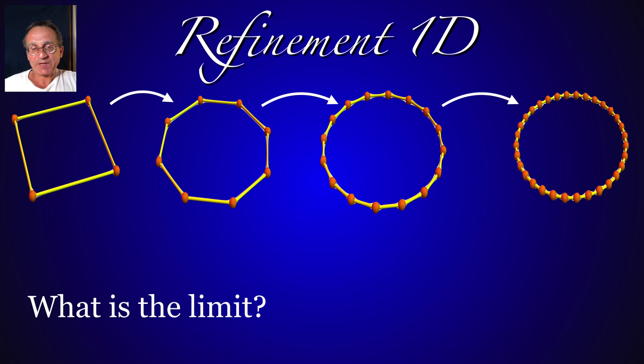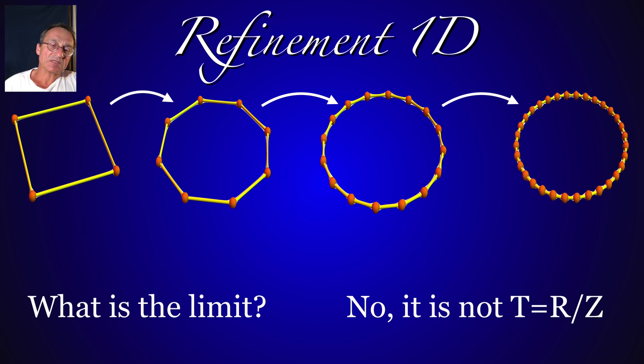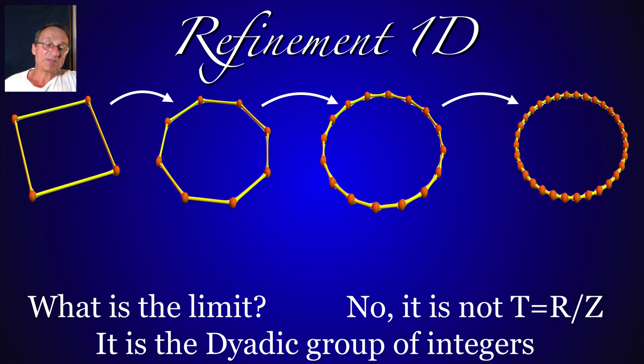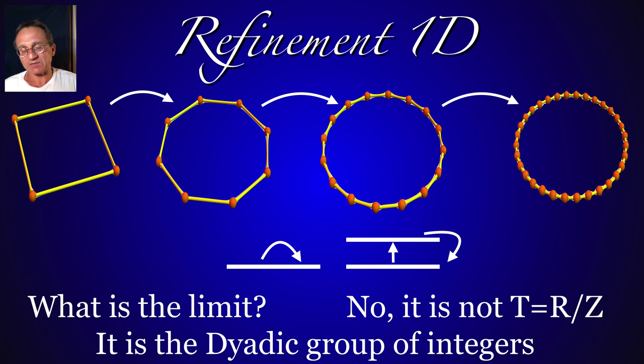And when we do it in one dimension, we can ask what is the limit? But it's not, in the case of the circular graph, it's not the circle as the limit. It's the dyadic group of integers, a pro-finite group. And one can understand this by using ergodic theory by doing integral extensions of a dynamical system. That's what the barycentric refinement leads to. And then this system has a unique fixed point in the space of measure-preserving transformations, which is a non-periodic system with group translation on that dyadic group of integers.